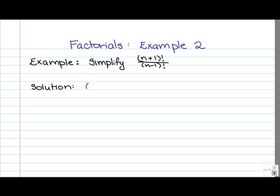So hopefully you've tried this out. Let's have a look at the solution. We have (n+1)! divided by (n-1)!. Remember in the numerator that (n+1)! is (n+1) times all the numbers below it. So if we subtract 1 from (n+1), we get n. If we subtract 1 again, we get (n-1). If we subtract 1 again, we get (n-2), and so on.